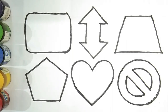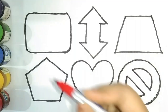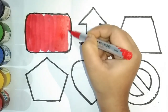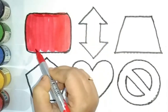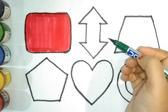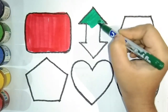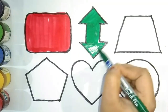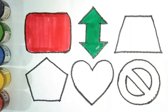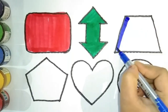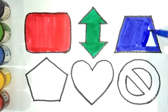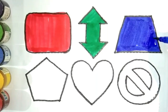Let's draw some shapes with colors. This is red color, and this is a round rectangle. Green color — this is green color, and this is an up and down arrow. Blue color — this is blue color, and this is a trapezoid.